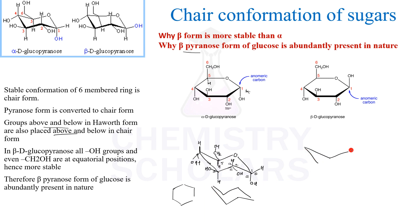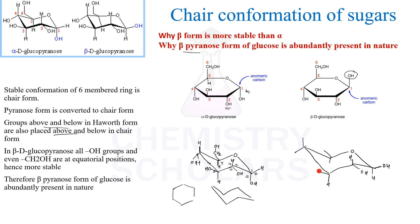Similarly, you can draw the beta form. Draw a nice chair, number it, first draw the axial bonds alternating, then the equatorial. The same thing applies: for beta, the anomeric OH is up, so here it goes on the equatorial position. For the remaining carbons, copy the previous structure — they are exactly the same.